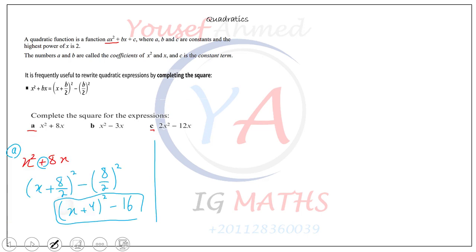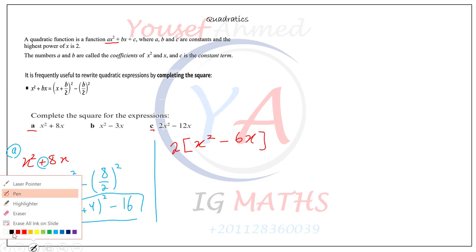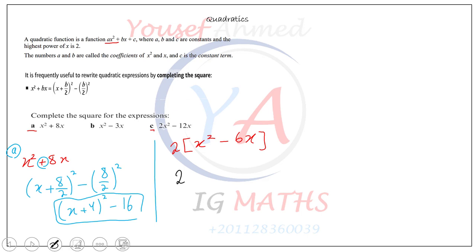For example (c): 2x² − 12x. As mentioned, you cannot complete the square without first taking out the HCF to make the coefficient of x² equal to one. Here 2 is the common factor, leaving x² − 6x inside the bracket.